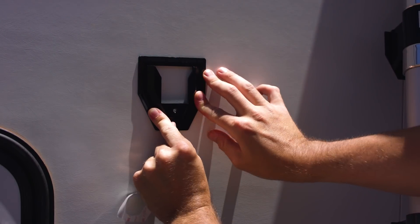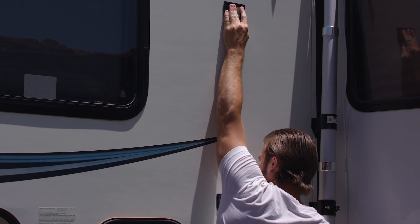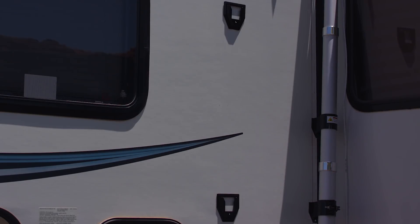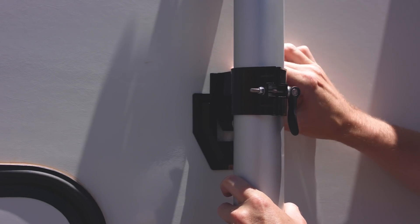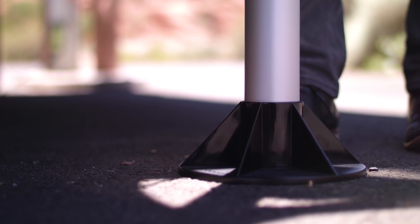Mount both adhesive mounts to the side of your RV. Be sure there is at least 4 feet of separation between the mounts for best performance. Fully extend the pole and use the wall mount plates and ground mount plates to secure the pole.